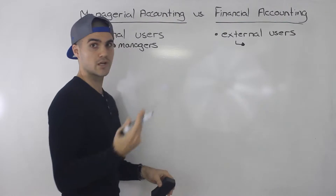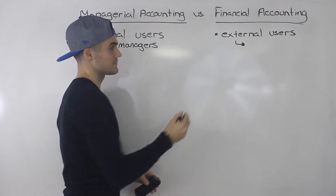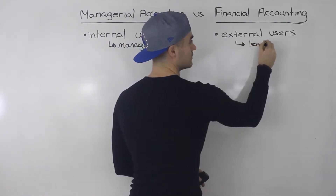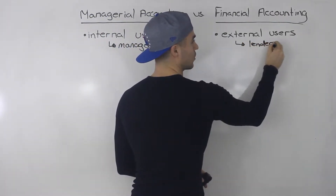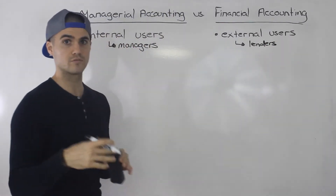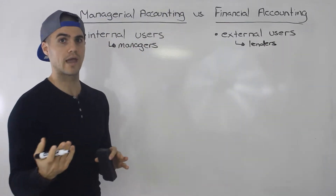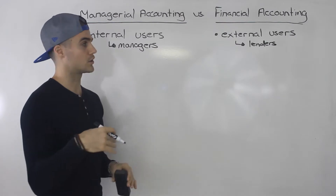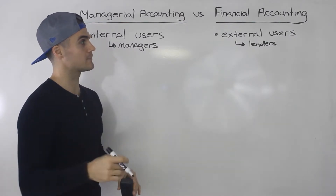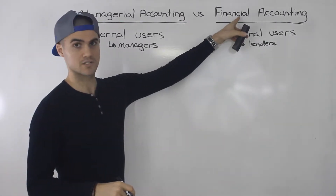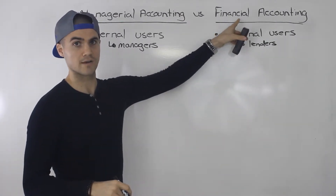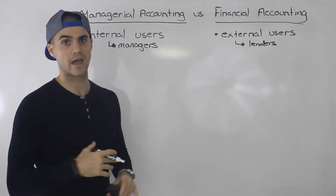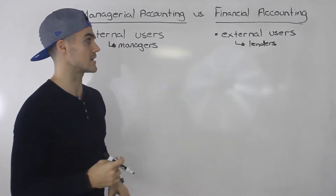The three common types of external users are lenders or creditors. For example, if you have a company and you want to borrow money to help grow your company, you're going to go to a bank. The bank is going to want to see your records — your financial accounting, your balance sheet, your income statement, statement of cash flows, et cetera.